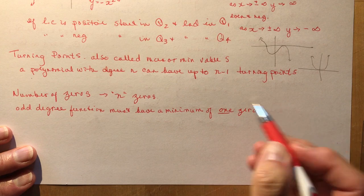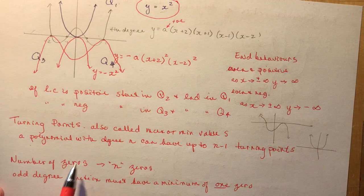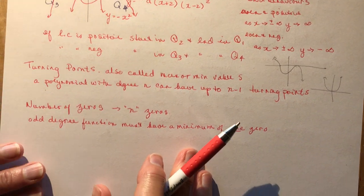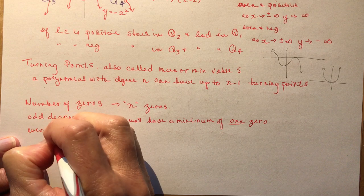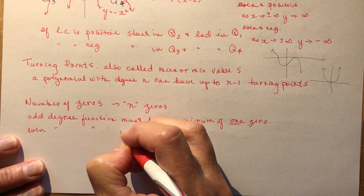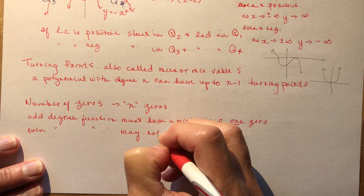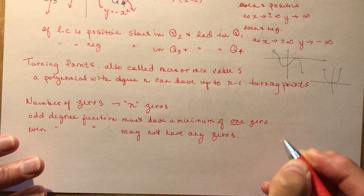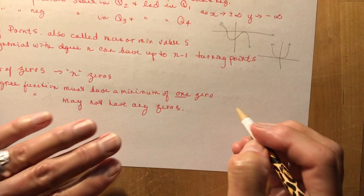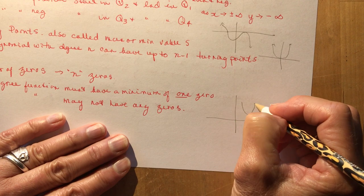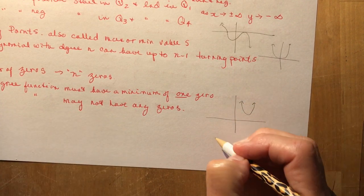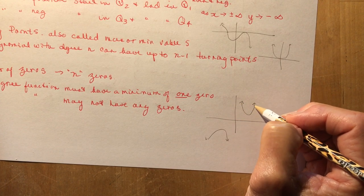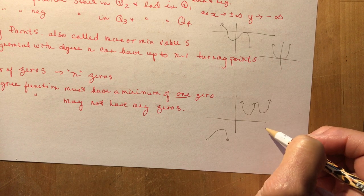You can't go from quadrant 3 to quadrant 1 without crossing the x-axis. An even degree function, on the other hand, may not have any zeros at all — it just might not have any. Why? Because you know that when you're doing quadratics, the parabola might not cross the x-axis. Same thing with a quartic function — you can make it so it doesn't cross the x-axis.